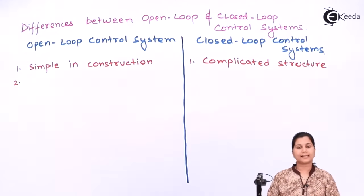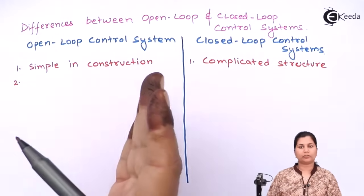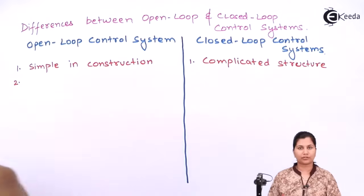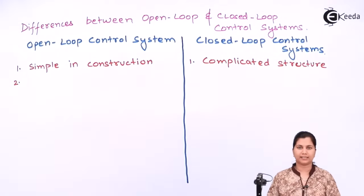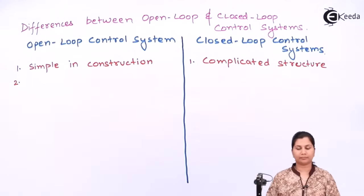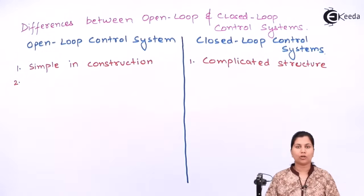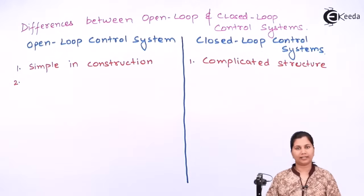The second difference is that as the open loop control system is simple in construction, the maintenance of these systems is very easy. Whereas the closed loop control system, having a complicated structure, its maintenance is difficult.